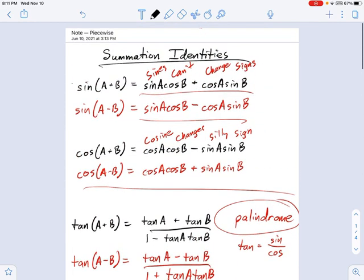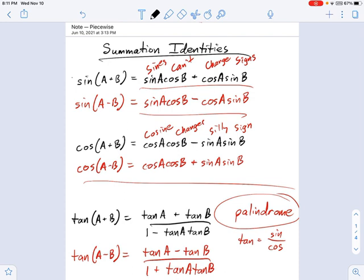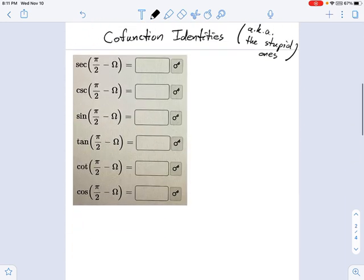We know the summation identities. And when you understand the summation identities, signs can't change signs, cosine changes to signs, all that. When you understand those, you don't need to memorize the co-function identities. You can just reinvent them.